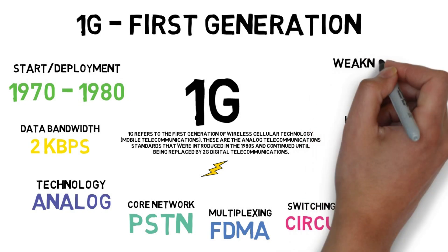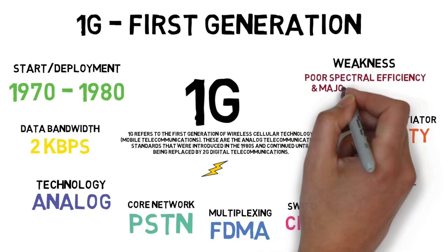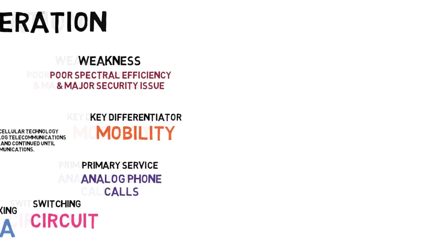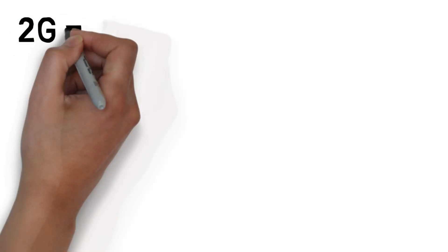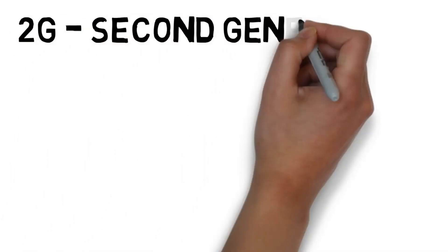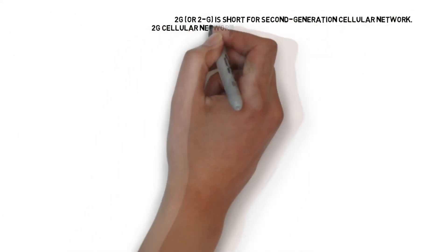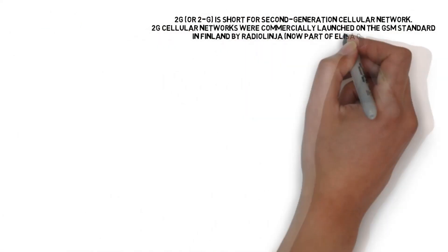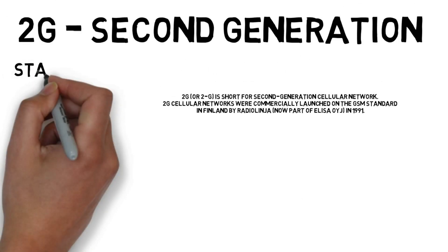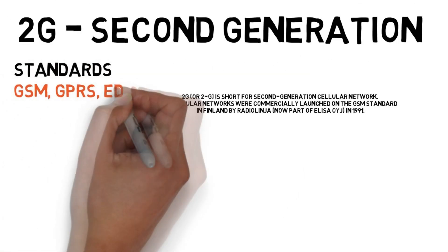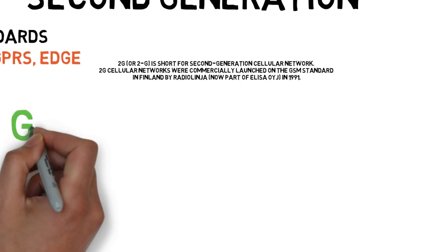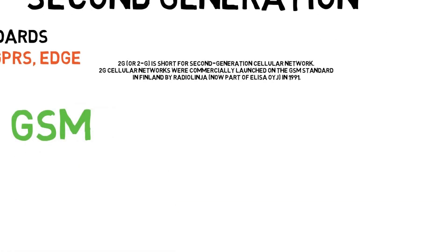The primary service offered is analog phone calls and the key differentiator is mobility. The weakness is poor spectral efficiency. 2G, the second generation cellular network, uses standards including GSM, GPRS, and EDGE.